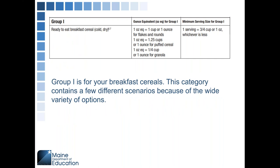Finally, Group I is your ready-to-eat breakfast cereals. This category contains a few different scenarios because of the wide variety of cereal types. For instance, a one ounce equivalent of a flake or round style cereal is either one cup or one ounce. For granolas, a quarter cup will give you a one ounce equivalent. So there are a few different scenarios to look at within this category.